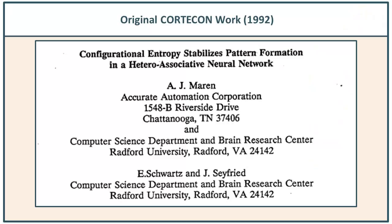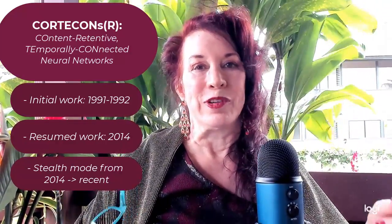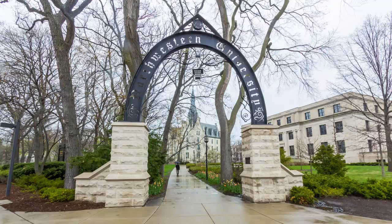My practice over the past decades has been as an inventor in the artificial intelligence and neural network space. For the past 10 years I've been developing the invention I'll be discussing with you today. I actually did the predecessor work back in 1991 and 92, with publications in 92 and 93. I picked up again on it a decade ago, and working in stealth mode, I've worked on it very quietly while teaching artificial intelligence at Northwestern University in their Master of Science in Data Science program. And now it's a good time to share with you.